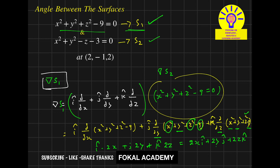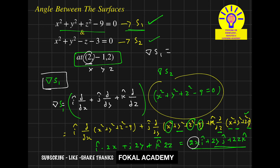We want the normal vector at this point. Now substitute this point into the equation. Del S1 at this point: x = 2, y = −1, z = 2. So it becomes 2×2 = 4, giving 4 i-cap; 2×(−1) = −2, giving −2 j-cap; and 2×2 = 4, giving 4 k-cap. This is the normal vector for surface 1.